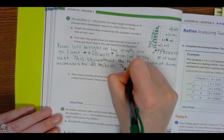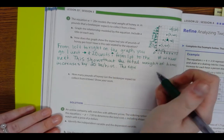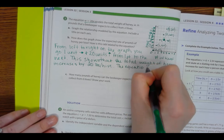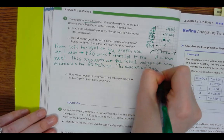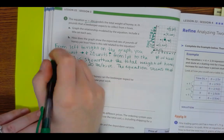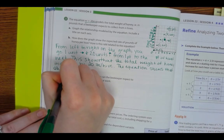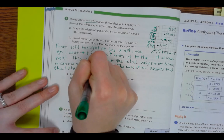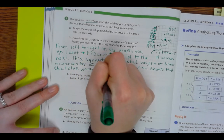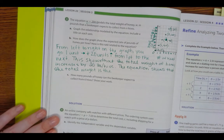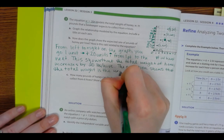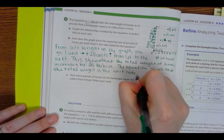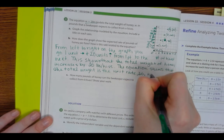The equation W equals 20 times N shows that the total weight is the unit rate, which is 20 over 1 which is also just 20, times the number of hives.